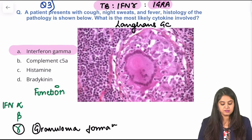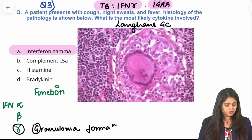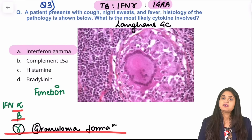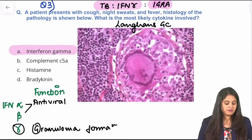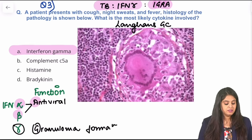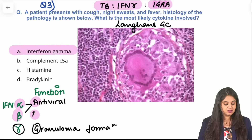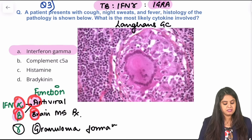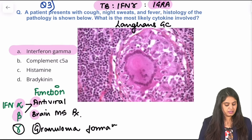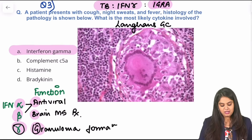Let's also cover alpha and beta interferons. Alpha — A for antiviral properties. Both alpha and beta have antiviral properties, but for single best answer, A has antiviral properties. Beta — B for brain: interferon beta is used for treatment of multiple sclerosis. So: alpha for antiviral properties, beta for brain/multiple sclerosis treatment, and gamma for granuloma formation.